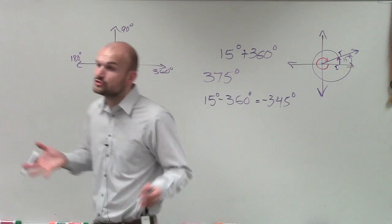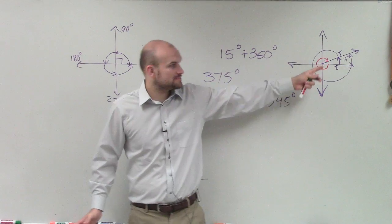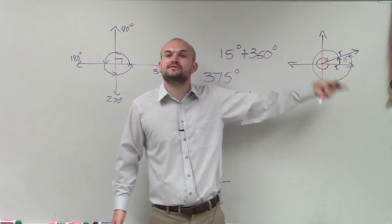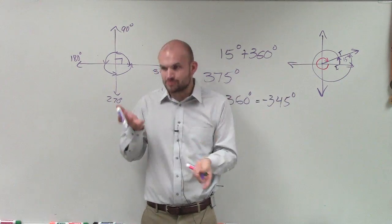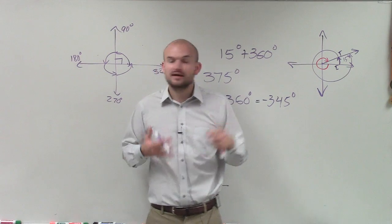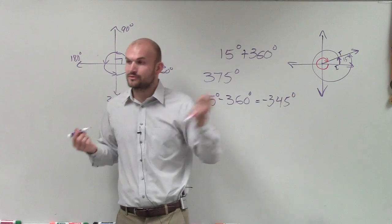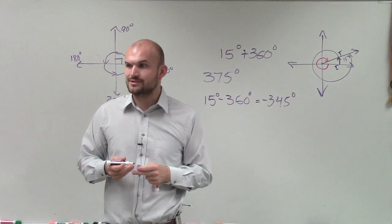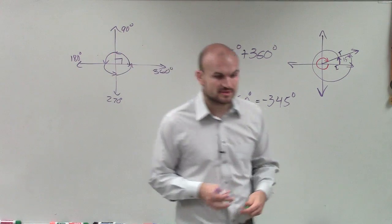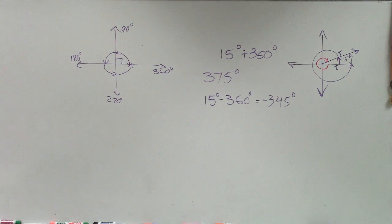Does that make sense? Okay, so usually, whenever you see an angle that's between 0 and 360 or 0 and 2 pi, you add and subtract 2 pi to find the coterminal angles. If it's larger than 2 pi or 360, you have to add twice or subtract twice, sometimes even larger, sometimes even more.